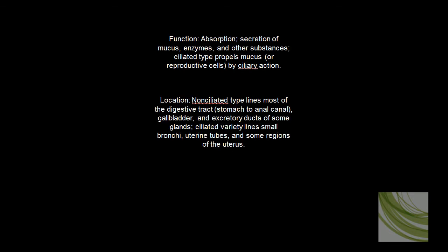Simple columnar epithelium is found through most of the digestive tract, starting in the stomach and going all the way through the anal canal. There it primarily absorbs nutrients or secretes enzymes, mucus with goblet cells, and other substances.